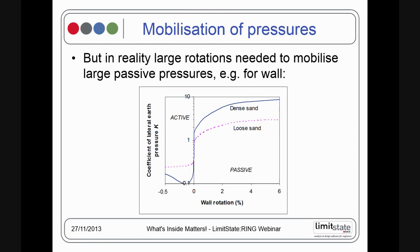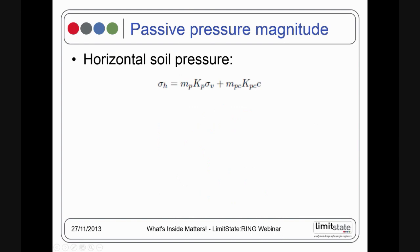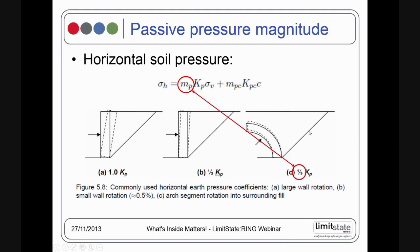To address this, rather than using peak passive pressures or the standard Kp earth pressure coefficient, we scale it down by a mobilization factor — generally by a third in the masonry arch bridge context. It has been tried and tested by many workers over many years, and you get a remarkably good correlation when you use a factored-down value of Kp (Kp/3) rather than the peak value.